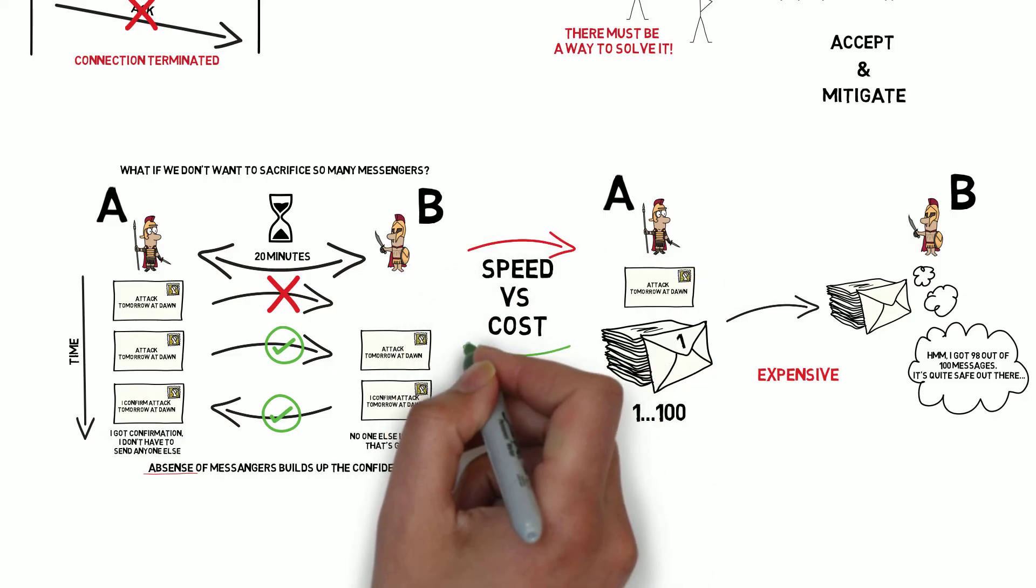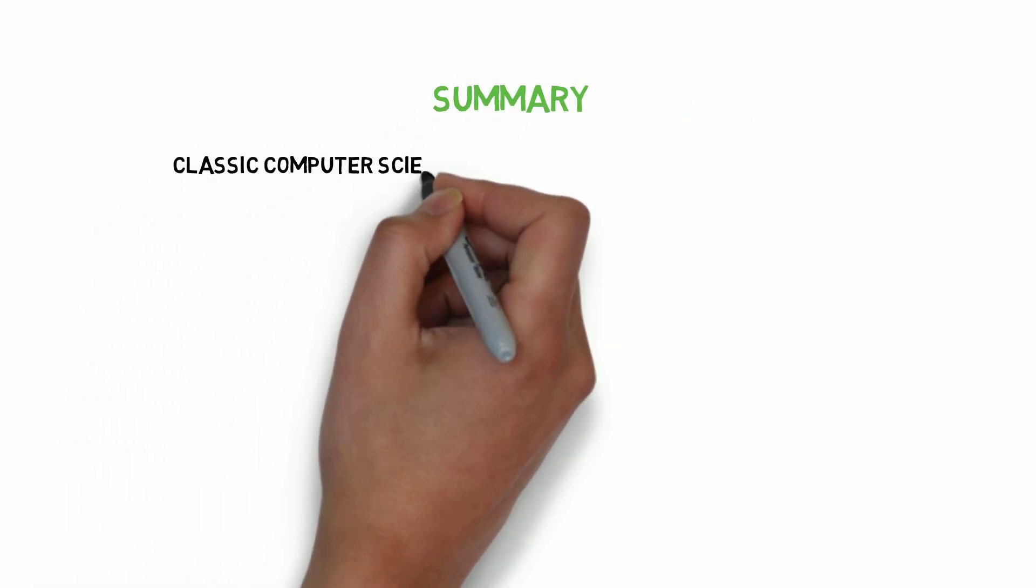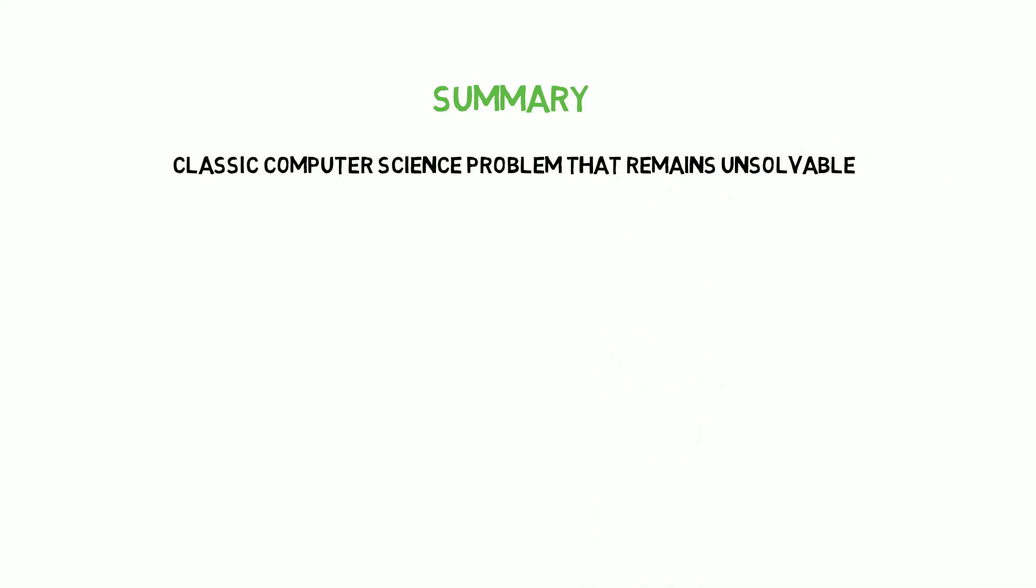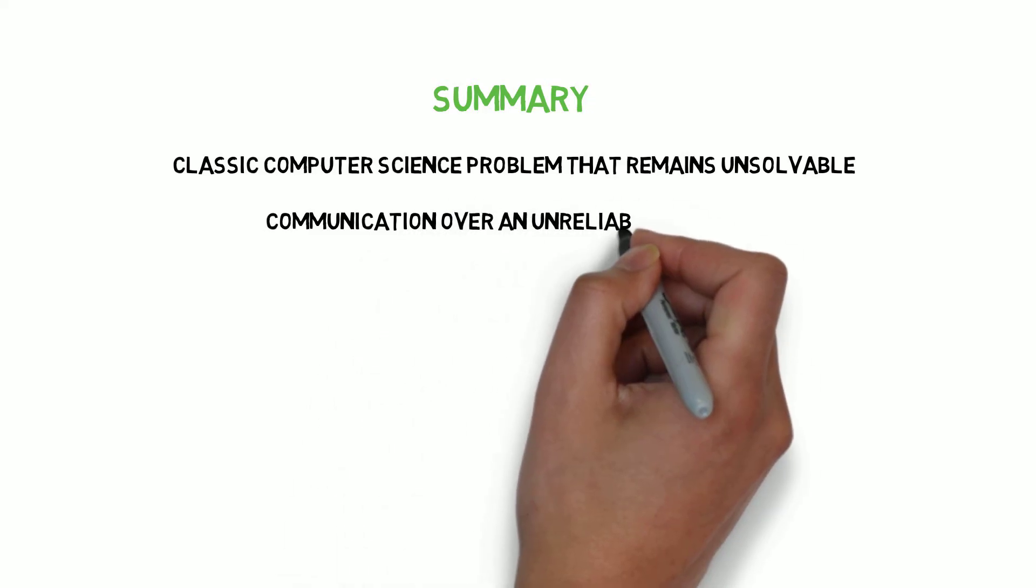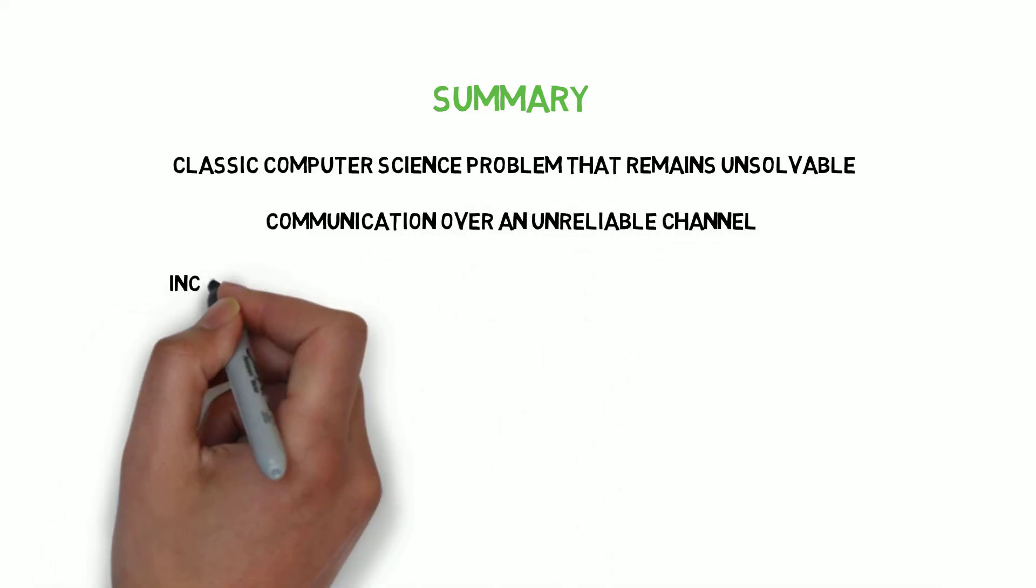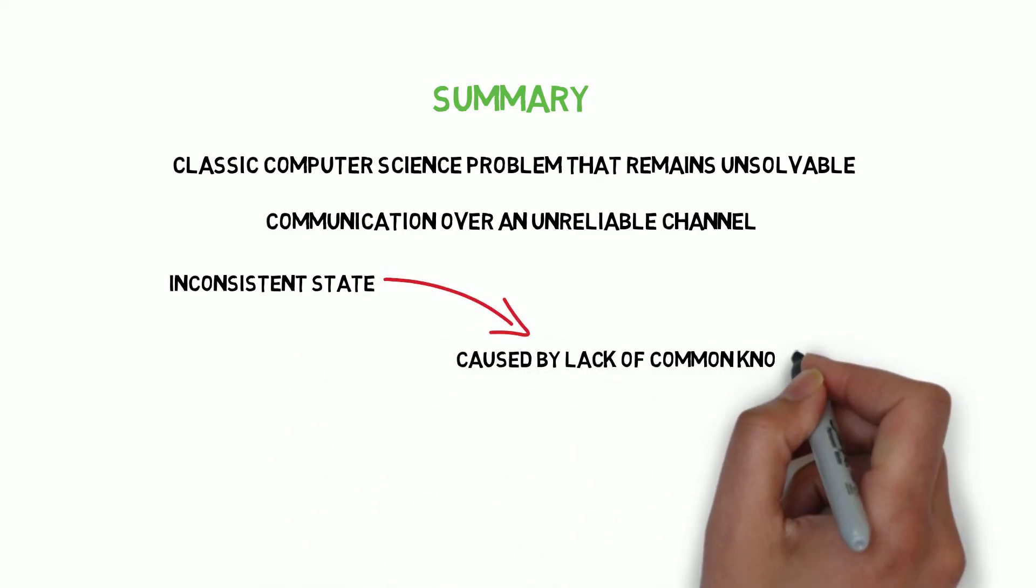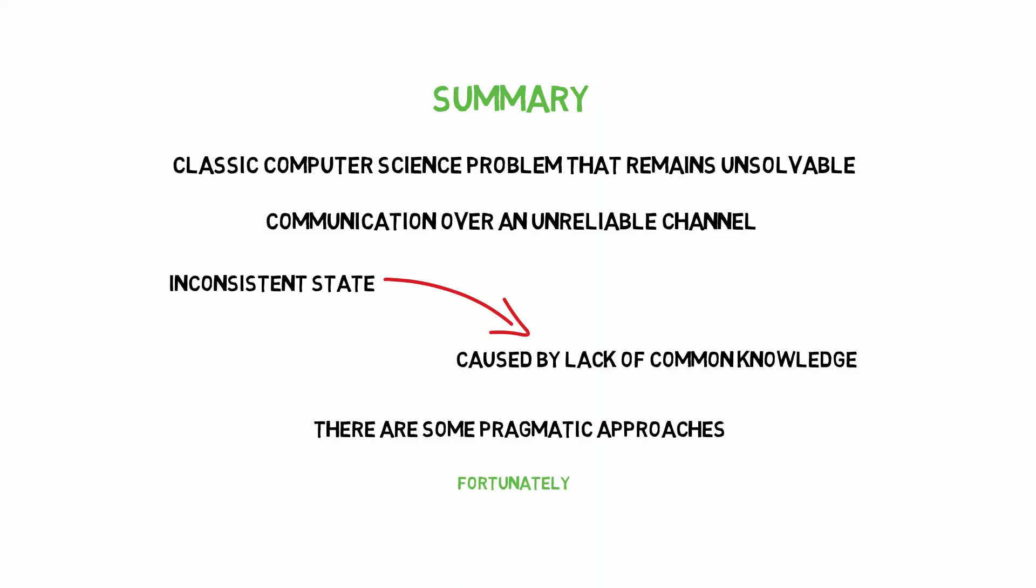And that's the end of the story of the two generals. Time for a quick summary. Two generals problem is a classic computer science problem that remains unsolvable. It comes up whenever we talk about communication over an unreliable channel. The main problem is an inconsistent state caused by lack of common knowledge. There are some pragmatic approaches to the two generals problem.